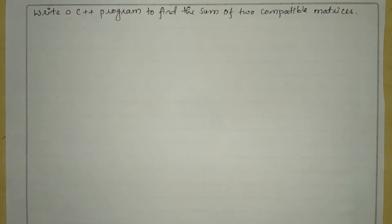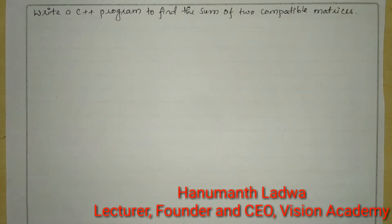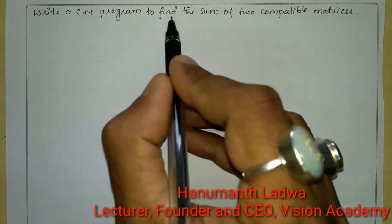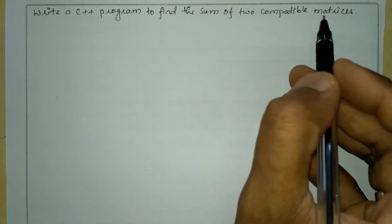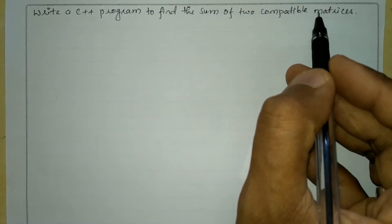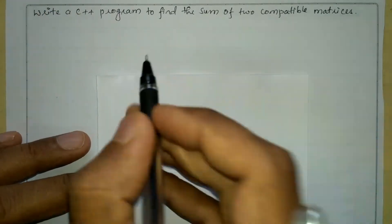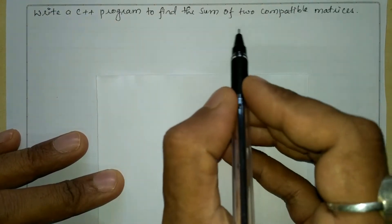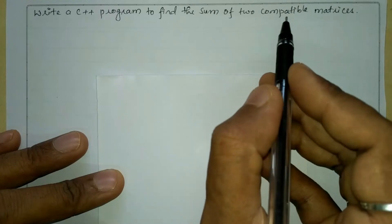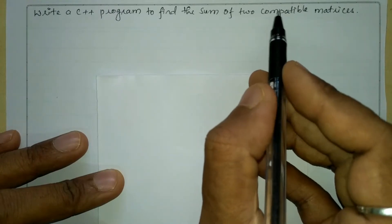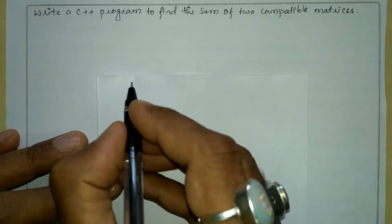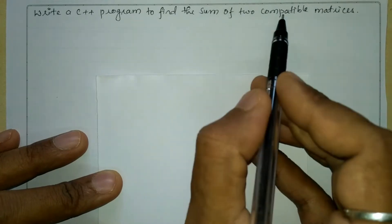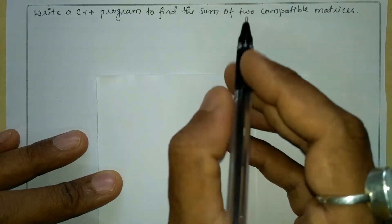Hello and welcome to Vision Academy. My name is Hanman Ladwa and in this video we are going to write a C++ program to find the sum of two compatible matrices. The sum of two compatible matrices means the number of rows and number of columns of both the matrices must be equal. In such a situation only the sum of matrices is possible.